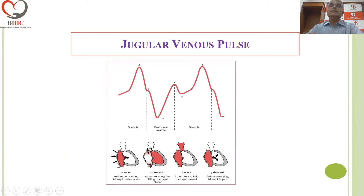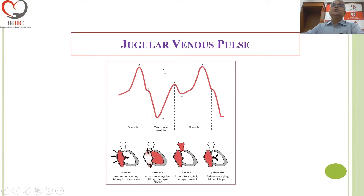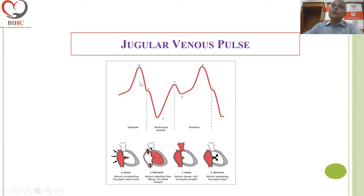When the atrium is contracting — in the later part of diastole — you get the A wave. As the tricuspid valve descends during ventricular contraction, you get the X descent. Later, you get the V wave as the atrium is filling. As the tricuspid valve is opening, you get the Y descent, then the A wave again. The A wave denotes atrial contraction; the V wave denotes atrial filling and is a systolic event. You recognize the A wave as pre-systolic by palpating the corresponding carotid — if the wave is seen along with the carotid pulsation, it's a V wave.